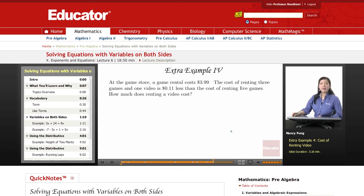This example is setting up an equation from a word problem. At the game store, a game rental costs $3.99. The cost of renting three games and one video is 11 cents less than the cost of renting five games. How much does renting a video cost?